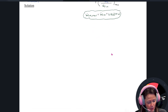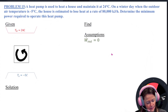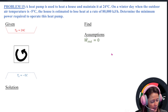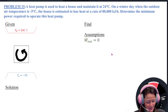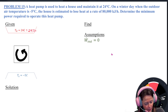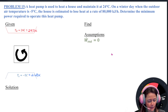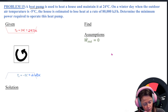Problem 15. We have a heat pump used to heat a house and maintain it at 24 degrees Celsius — that's 297 Kelvin. The outside temperature is negative 5 degrees — that's 268 Kelvin. So a heat pump pulls heat out of the cold space at a rate of Q dot L, from the cold outdoors, and adds it to my heated house.